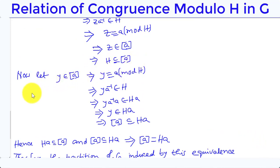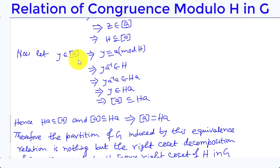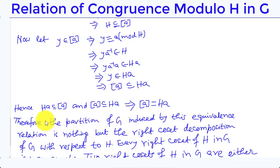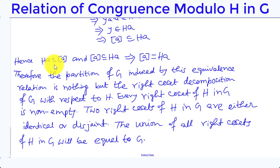Now let y ∈ [a]. This implies y ≡ a (mod H), which implies y·a⁻¹ ∈ H, which implies y ∈ Ha. Therefore, [a] ⊆ Ha. Since Ha ⊆ [a] and [a] ⊆ Ha, it follows that [a] = Ha, i.e., the equivalence class of a equals the right coset Ha.